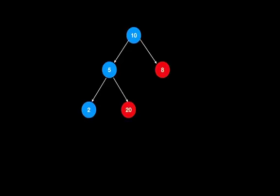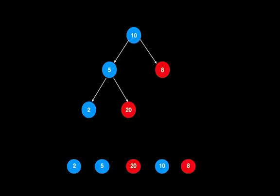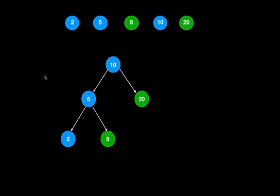The inorder traversal of this input tree is 2, 5, 20, 10, and 8. We sort this array and convert it into a binary search tree again — this is our required answer. Although this method is very simple, it is not the most efficient way, as the time complexity is O(n log n). We can do better than this.